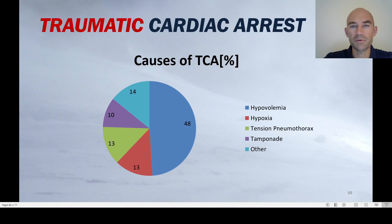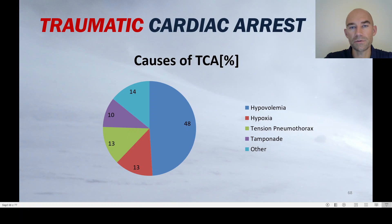Around 50% of traumatic cardiac arrests are due to hypovolemia — hemorrhagic shock. The second and third reasons are hypoxia and tension pneumothorax, each accounting for 13%. About 10% of traumatic cardiac arrests are due to cardiac tamponade, and approximately 15% are due to other causes.